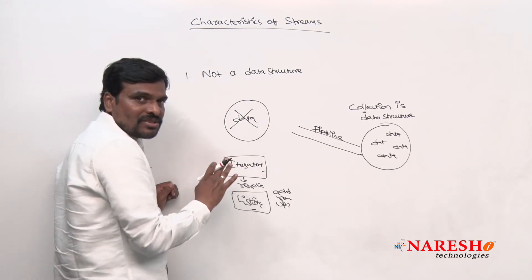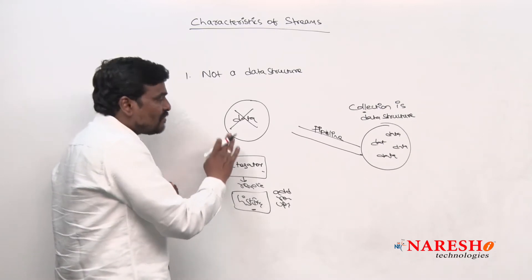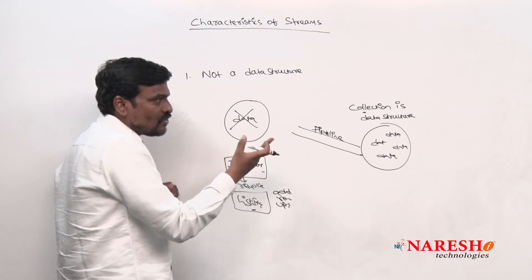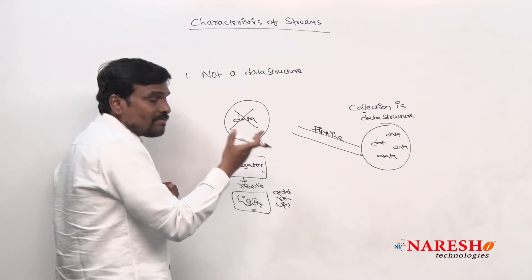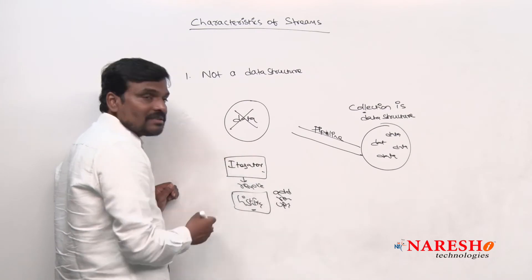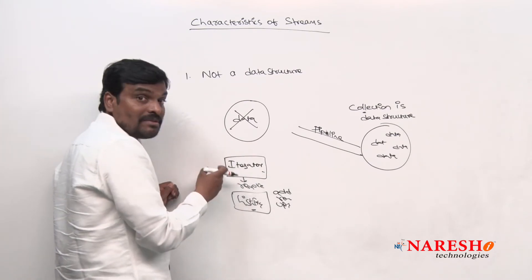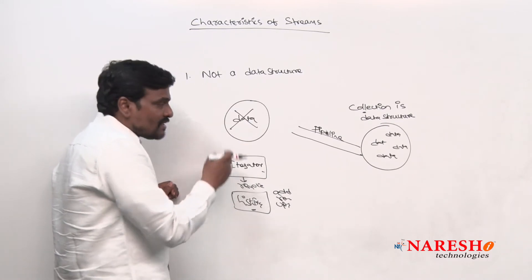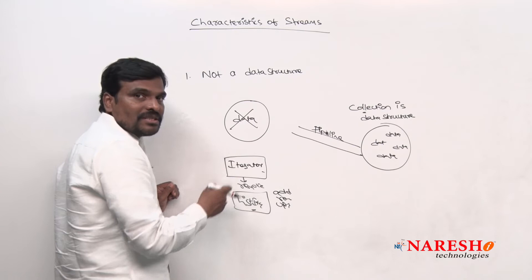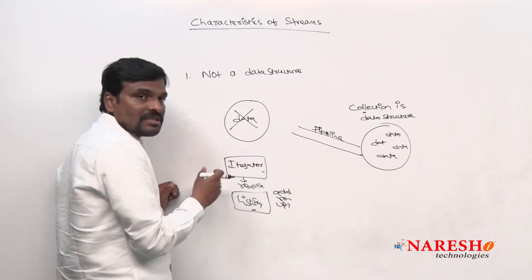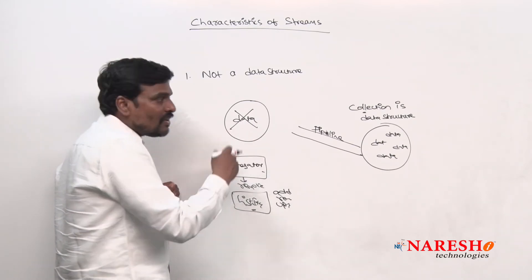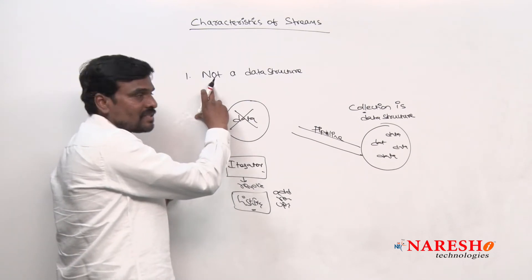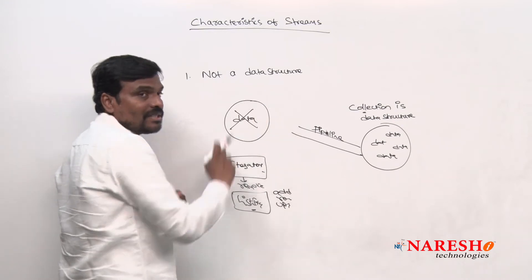Stream is not a data structure; it does not contain any data. A stream reads data from a source — that source can be a collection — and performs certain operations. Stream does not do any changes to the collection; its operation is just reading the data, not changing the data. This is the first characteristic: stream is not a data structure.